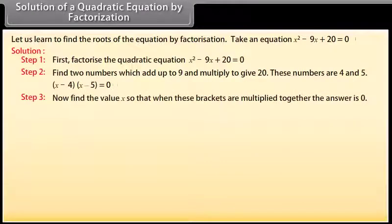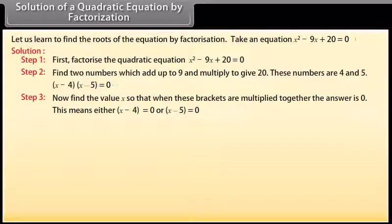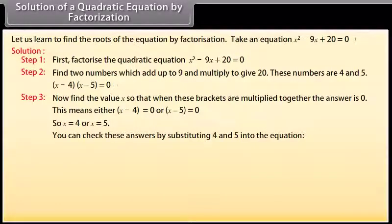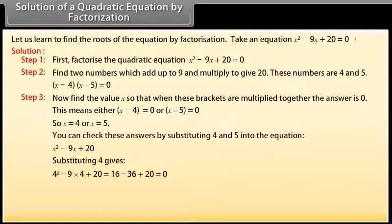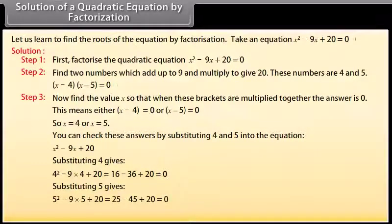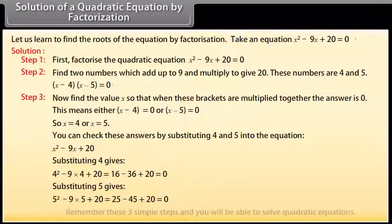So (x − 4)(x − 5) = 0. Now find the value of x so that when these brackets are multiplied together the answer is zero. This means either x − 4 = 0 or x − 5 = 0, so x = 4 or x = 5. You can check these answers by substituting 4 and 5 into the equation x² − 9x + 20: substituting 4 gives 16 − 36 + 20 = 0; substituting 5 gives 25 − 45 + 20 = 0.